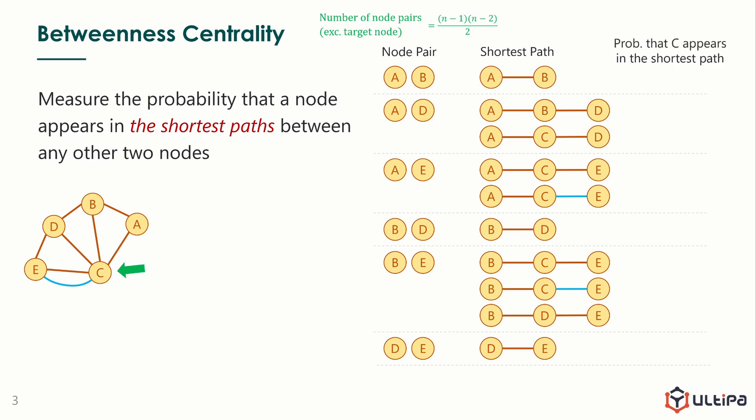For each node pair, we consider the probability that node C appears in the shortest path. Give a generic math expression for these two. Sigma ij represents the number of shortest paths between nodes i and j, and Sigma ijc represents the number of shortest paths between ij that pass node C. We check those paths involve C, and calculate the probability.